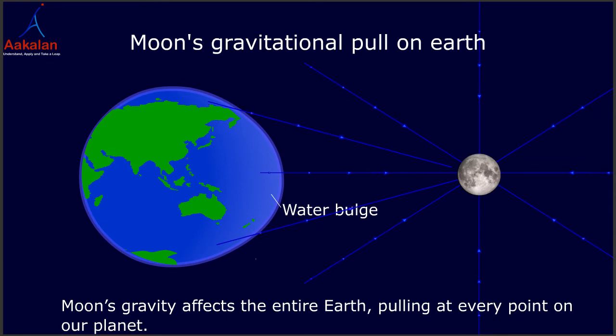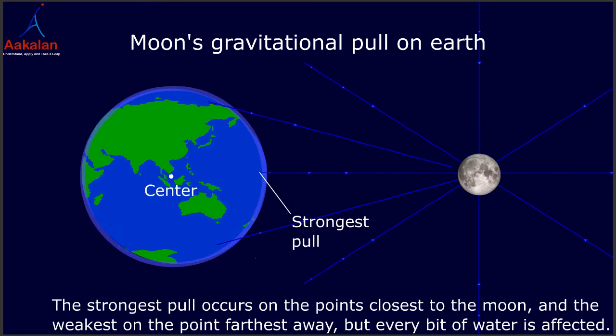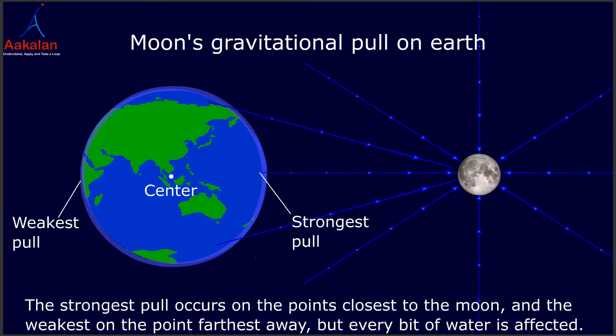Moon's gravity affects the entire earth, pulling at every point on our planet. The strongest pull occurs on the points closest to the moon, and the weakest on the point farthest away, but every bit of water is affected.